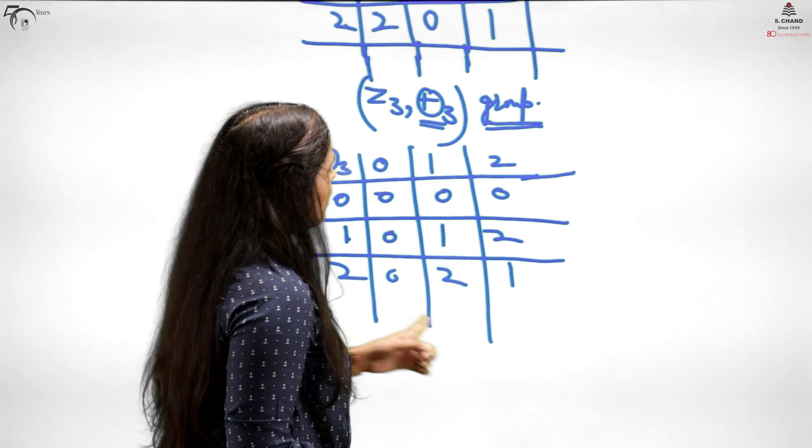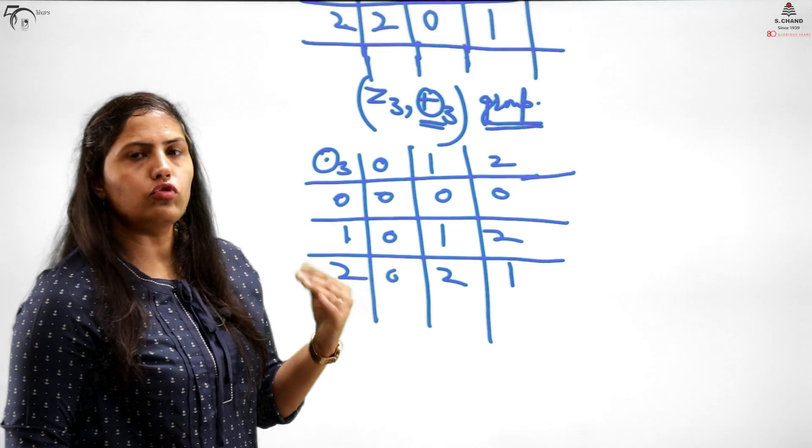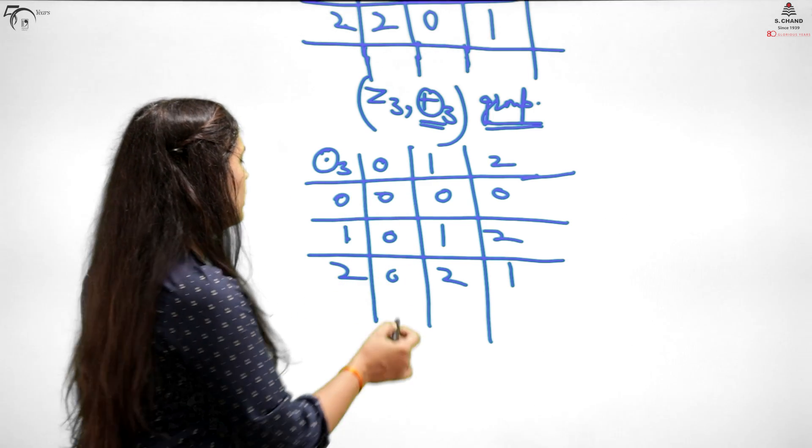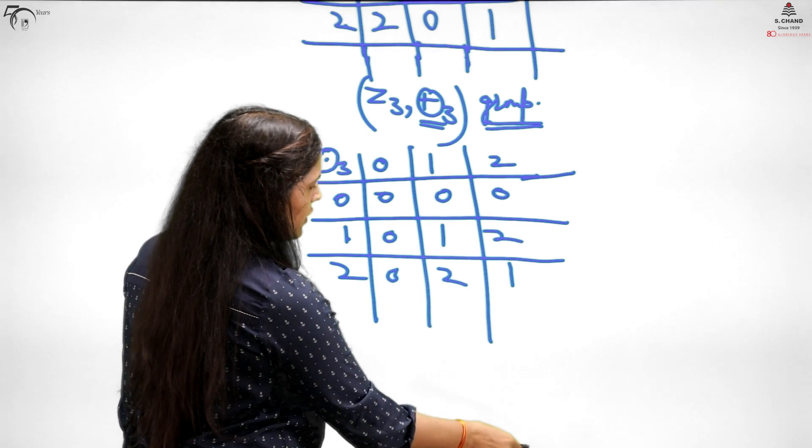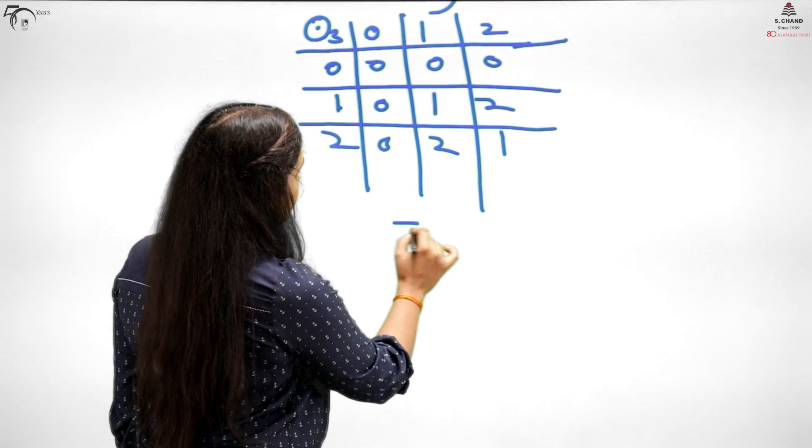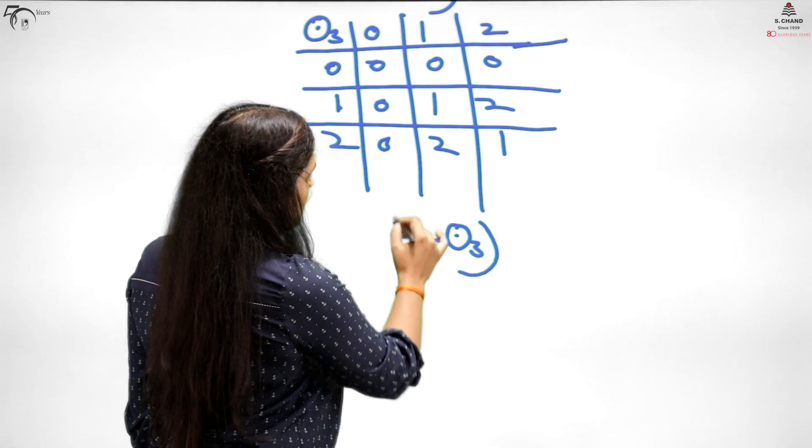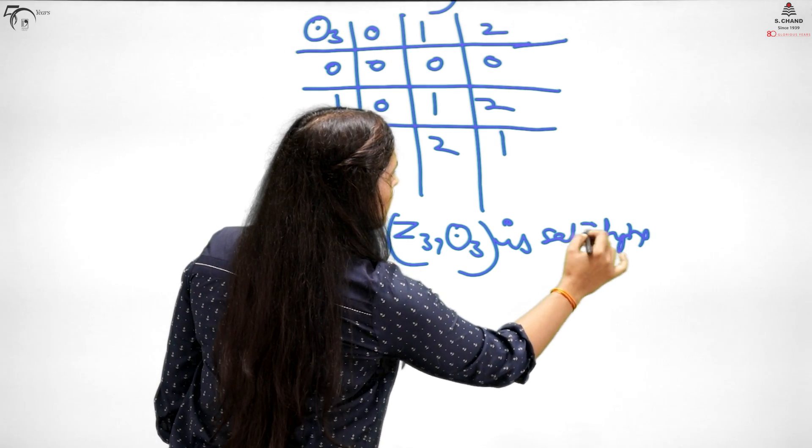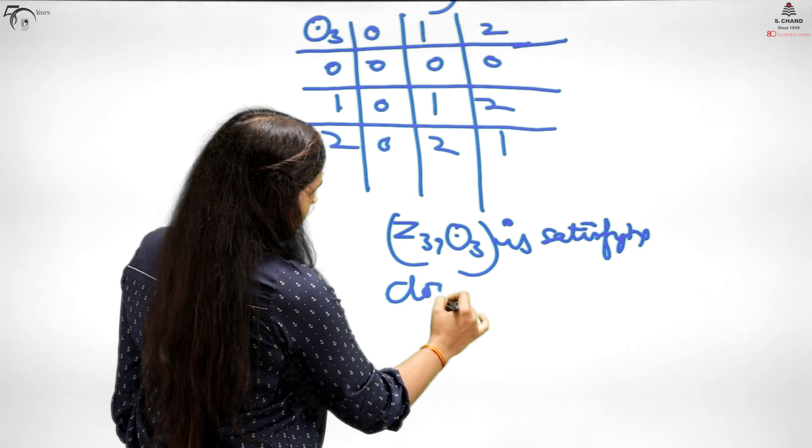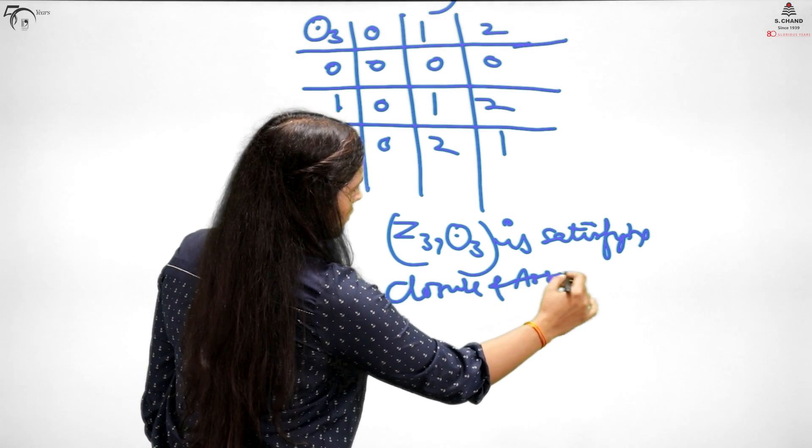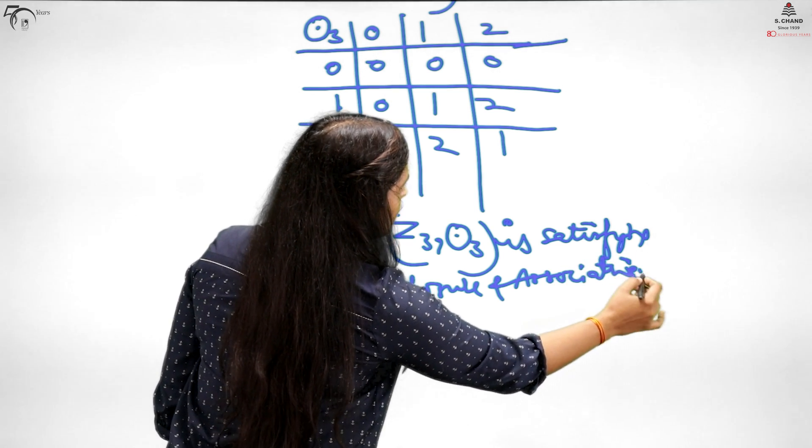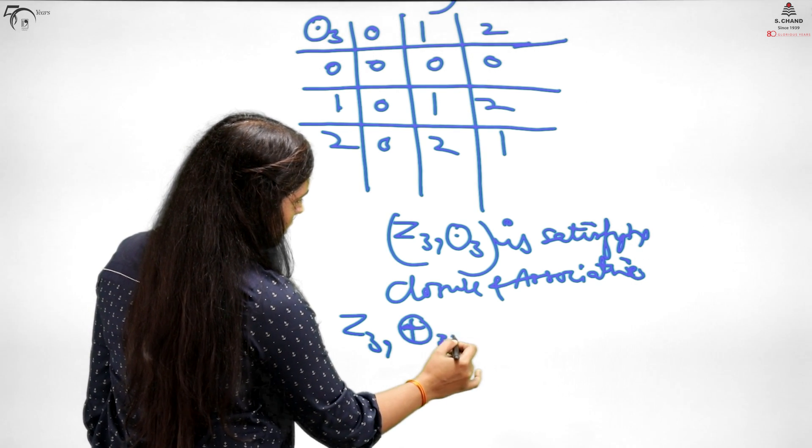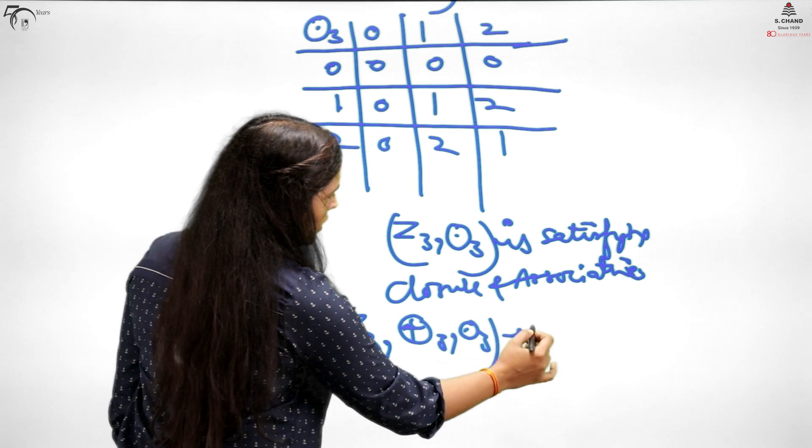You can check that in columns, they may not be all different like in plus, which I check because with respect to plus it should be a group. But with respect to dot, there is no condition that it should be a group. But elements should be from the set, and all elements are from the set. So Z3 is satisfying closure and associative. Therefore Z3 plus dot is a ring.